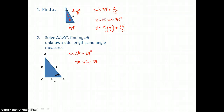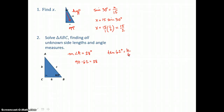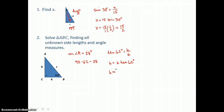To find side b, we use angle B = 62°: side a = 6 is adjacent and side b is opposite, so we use tangent. tan(62°) = b/6, so b = 6 × tan(62°). Since 62° is not a special angle, we approximate with a calculator. Make sure your calculator is in degree mode. Six times tangent of 62 gives side b ≈ 11.28, rounded to two decimal places.